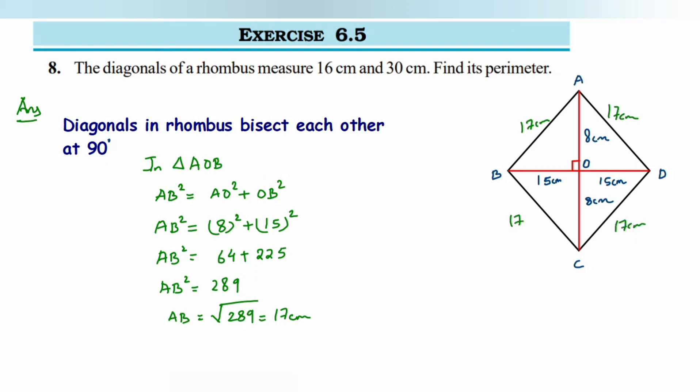The next step is we have to find its perimeter, as given in the question. Perimeter will be equal to 4 multiplied by side.